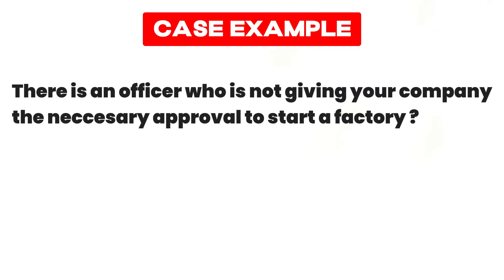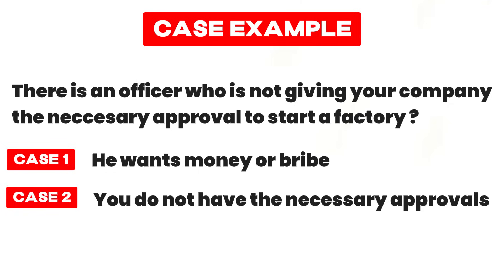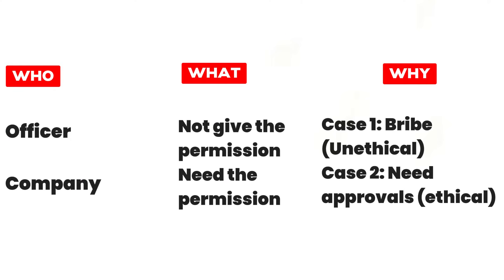After that comes the WHY section, where you list why the issue is happening — basically the root cause. You will also mark whether it is ethical or non-ethical. For example, suppose there is an officer who is not giving your company the necessary approvals to start a factory. In Case 1, the officer is not giving permission because he wants a bribe; in Case 2, he is not giving permission because you do not have the necessary approvals. Putting this in our framework — WHO: the officer and your company; WHAT: the officer's argument is he won't give permission, and the company's argument is that it needs the permission to start the factory.